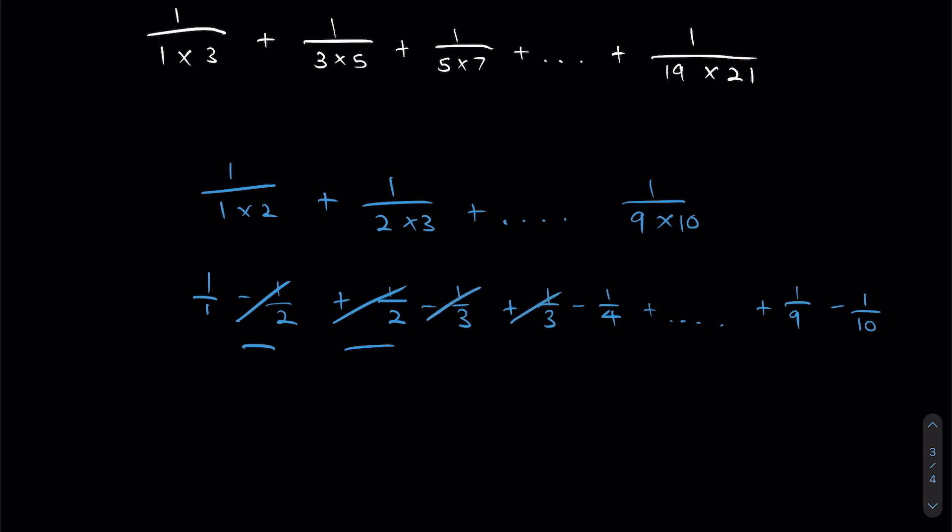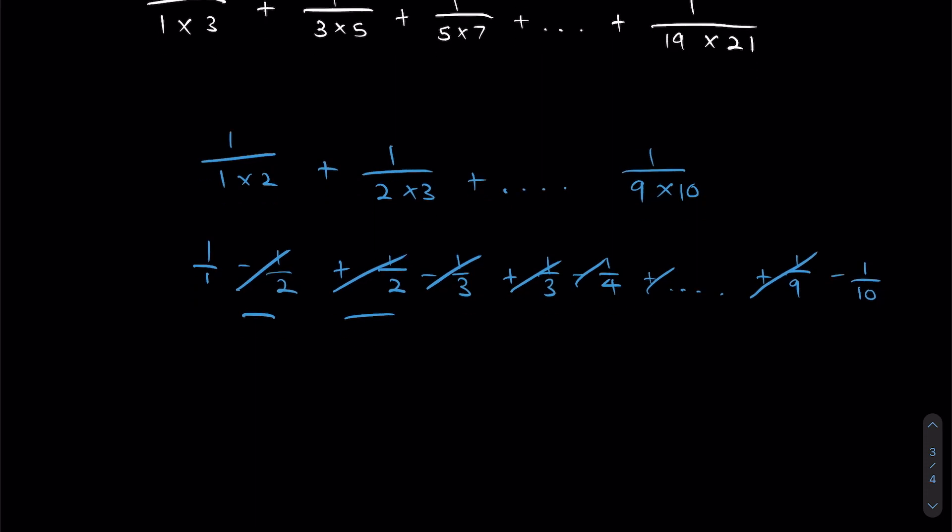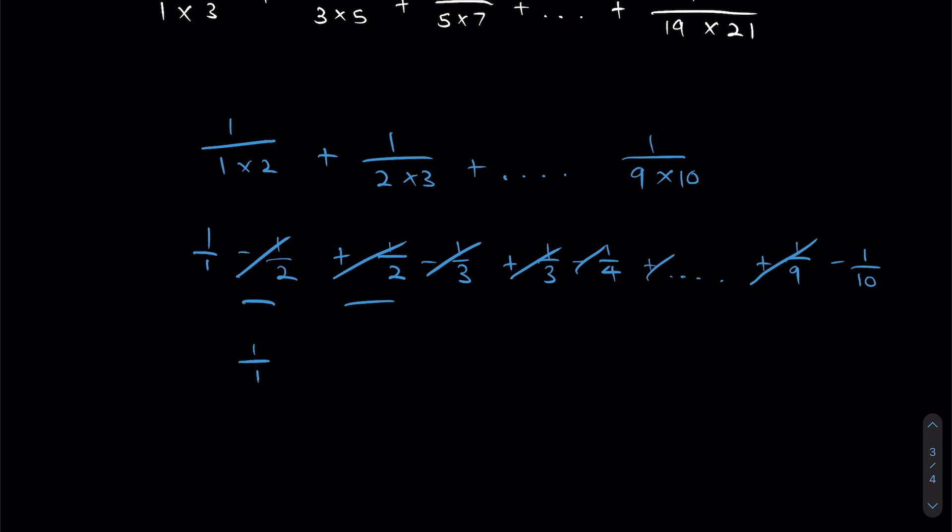And we can kind of see that there's some pattern going on here, right? So we'll just continue the cancellation all the way until the plus 1 over 9. Because 1 over 1 and 1 over 10 are the only two terms that won't repeat themselves. So this whole lengthy complex addition would actually boil down to just 1 over 1 minus 1 over 10, which will give us 9 over 10.